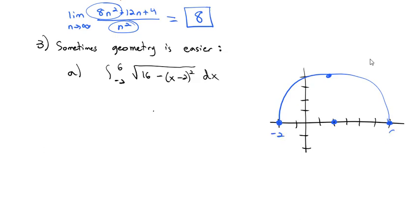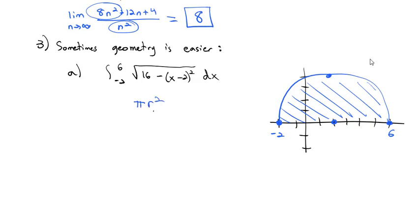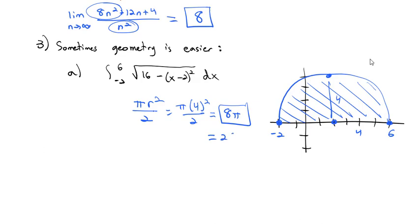We want the area from −2 to 6, which is this entire semicircle under that curve. The formula for the area of a circle is πr². Since this is a semicircle, we divide by 2. With radius 4, we get π(4²)/2 = 8π, which is approximately 25.13 square units.